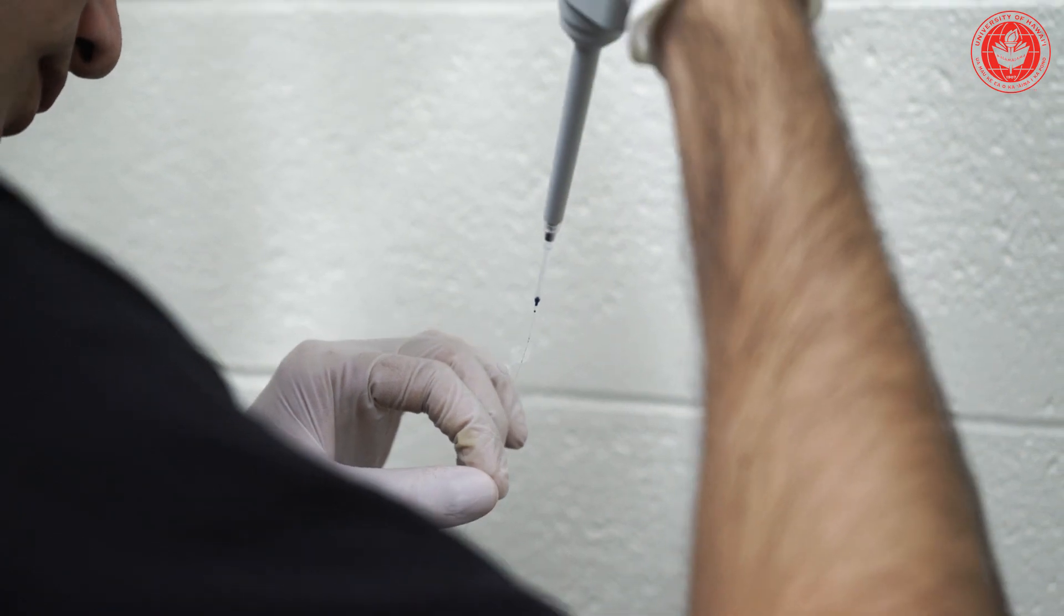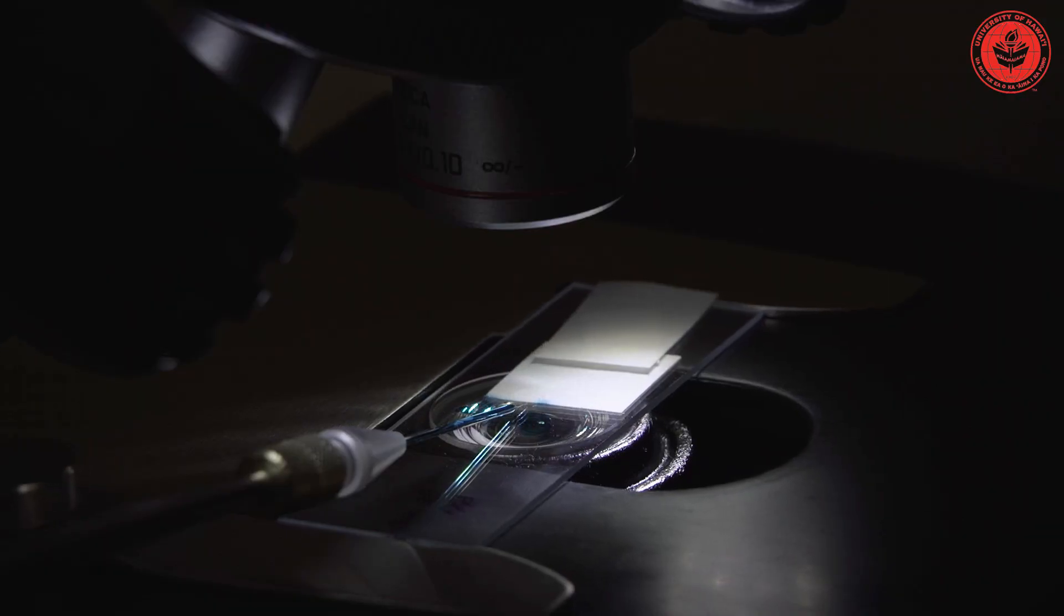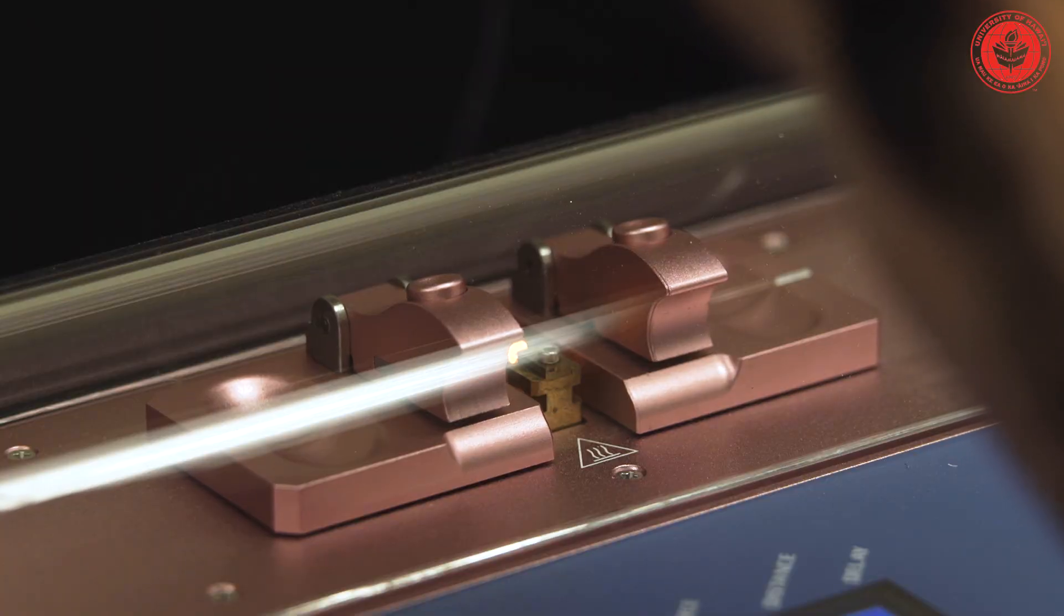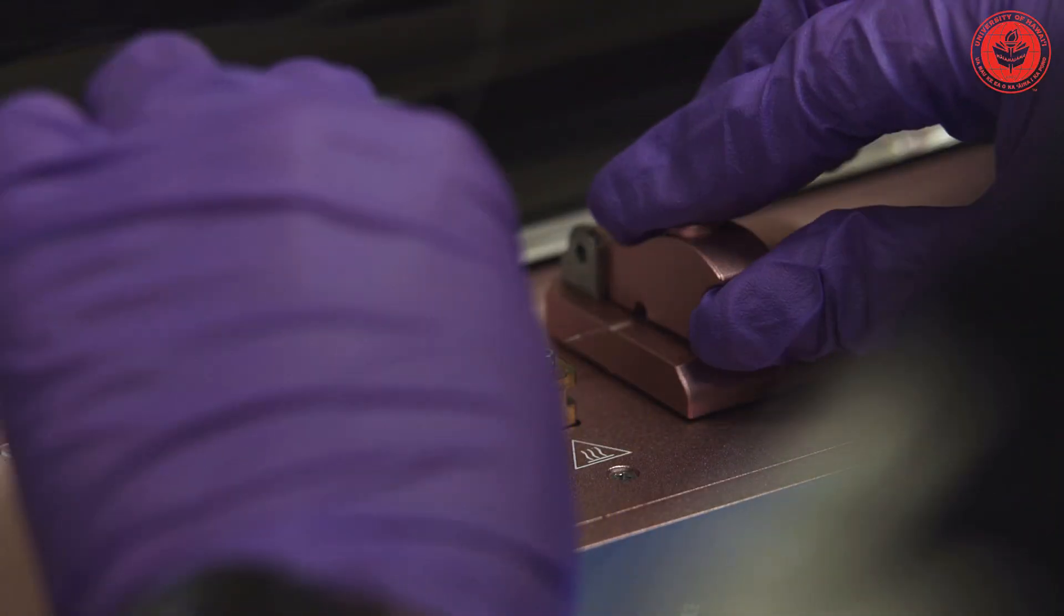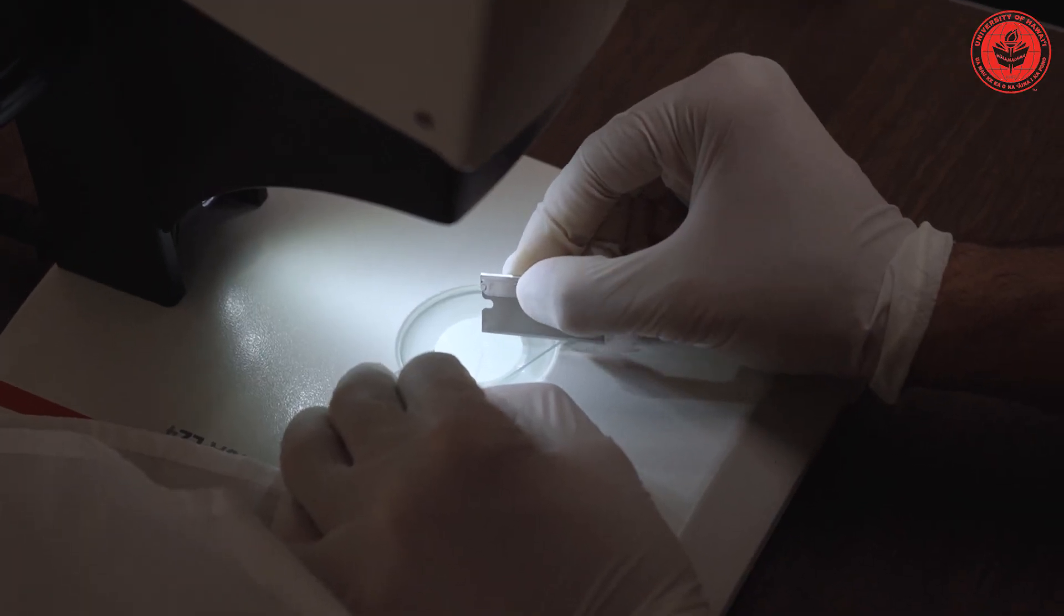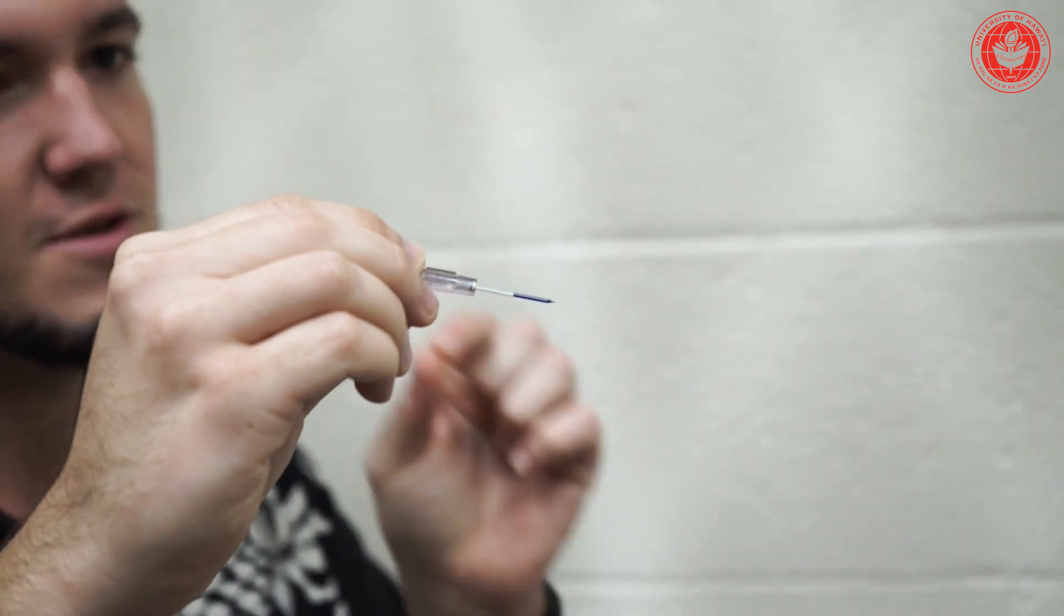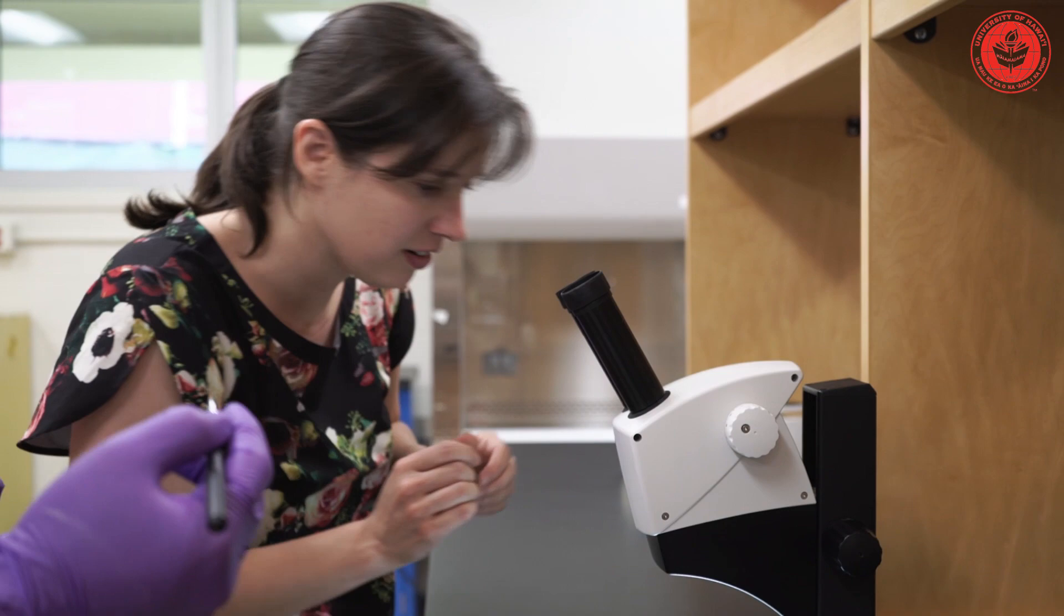Mosquito vector diseases are not something that native species here in Hawaii had ever experienced in their evolutionary histories. So particularly our native bird species had never had any selective pressures. They'd never had any opportunities to develop an immune response to the types of diseases that mosquitoes vector.